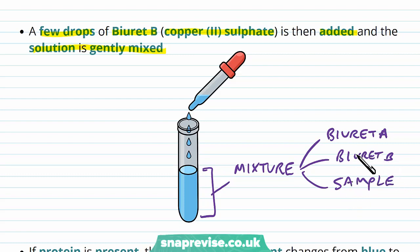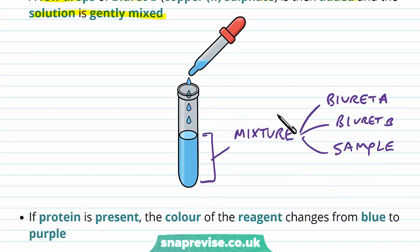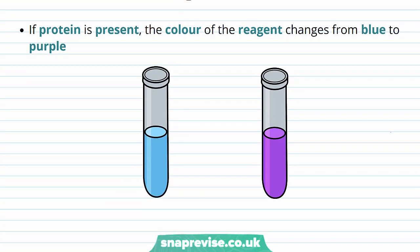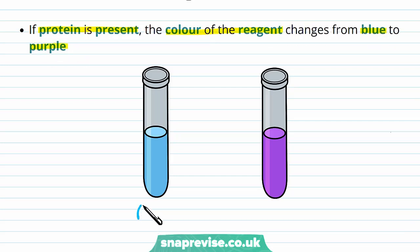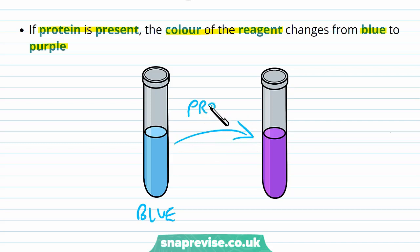Biuret B is the copper sulfate solution. If there is protein present in our sample — i.e. if those peptide bonds are detected — then the colour of the mixture changes from blue to purple. It starts out as blue just before the test, or stays blue if there are no proteins, and if proteins are present it changes to a purple colour.